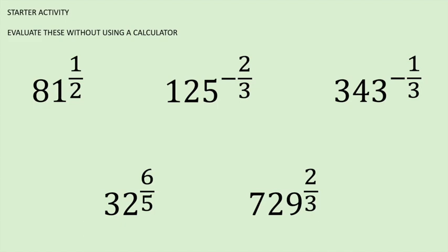Starting with 81 to the power of a half: when we raise a number to the power of a half, that is the same as saying the square root of that number. So 81 to the power of a half means the same thing as the square root of 81, which is 9.